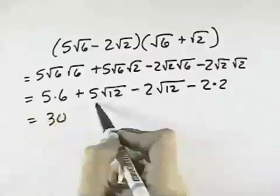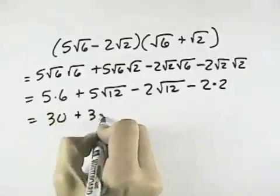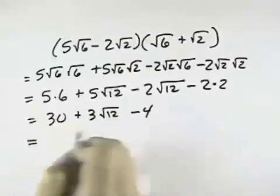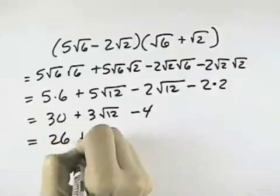So I have 30. 5 minus 2 is plus 3 times the square root of 12, minus 4. 30 minus 4 is 26, and then I have 3.